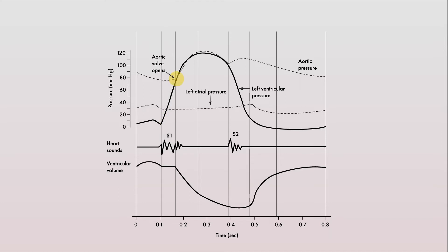Notice that as soon as the aortic valve opens, ventricular volume decreases, marking the period when blood is being ejected from the ventricles into the aorta.